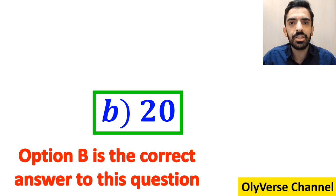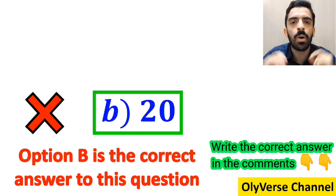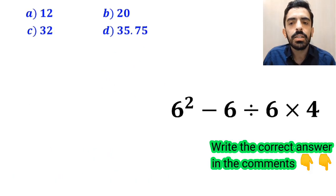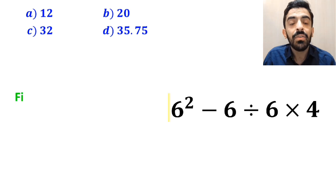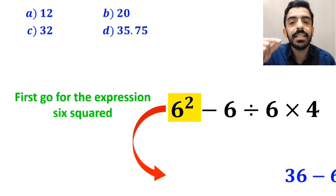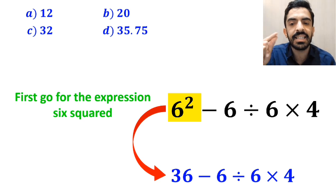However, this answer is absolutely wrong. Some other people, to solve this problem, first go for the expression 6 squared and simplify to 36 minus 6 divided by 6 times 4.